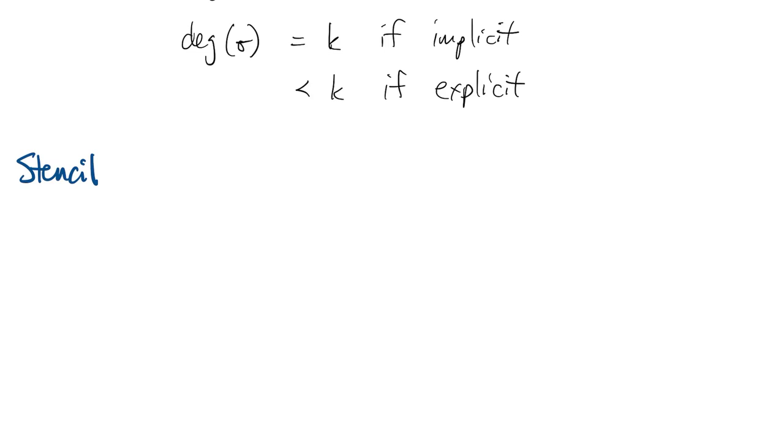Another shorthand for describing these methods is called the stencil. It leaves out the constants and just shows the positions of things in time. So we have one column of u values and another column of f values. Time is increasing in the columns. So for Adams-Bashforth method, we would use just two different values of u, and then we would use values of f starting at time ti and going back.